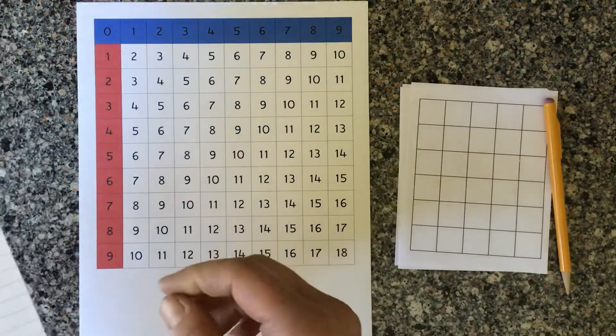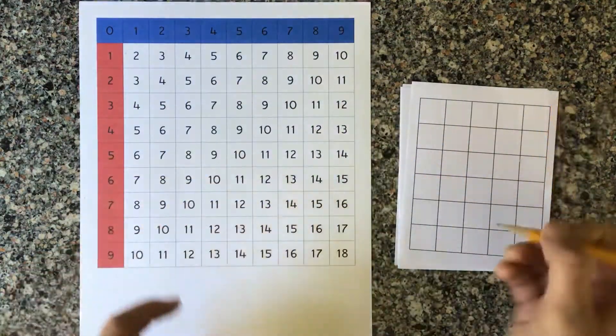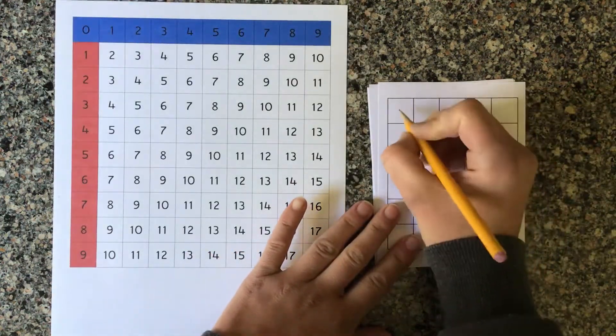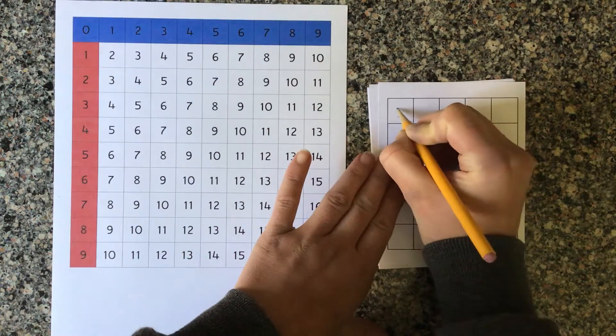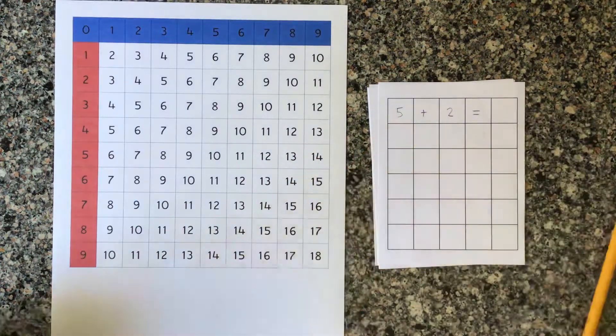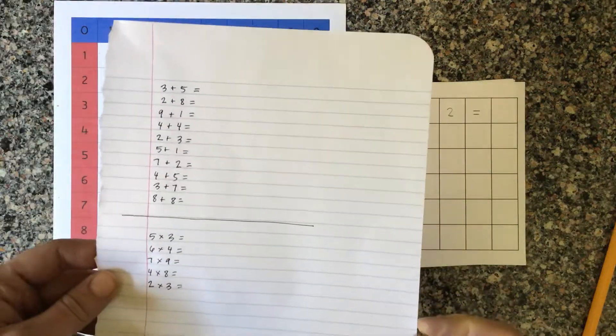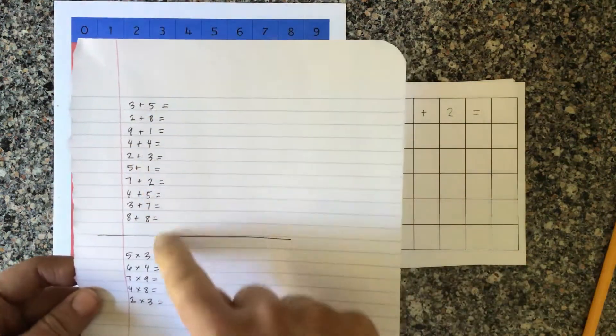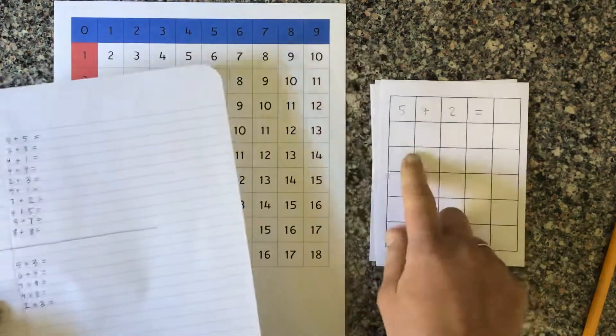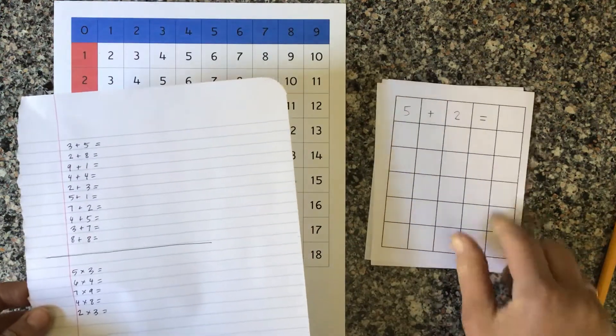You can choose to have your child come up with their own addition problems and write them out here, like for example 5 plus 2 equals. They could come up with those problems on their own, or you could write several addition problems on a piece of paper and invite your child to copy them onto the grid paper and find the sum on their own.